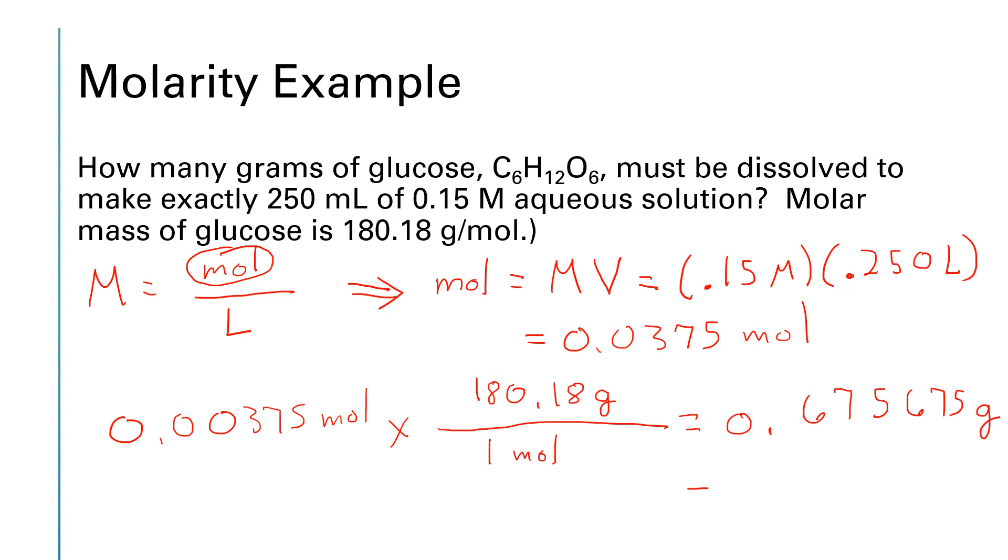I really can only keep two significant figures, so that will round off to 0.68 grams of glucose. So if we take 0.68 grams of glucose and dissolve it in enough water to make 250 milliliters of solution, the resulting solution will have a concentration of 0.15 molar.